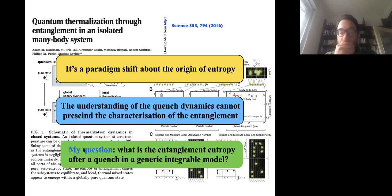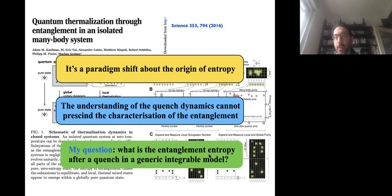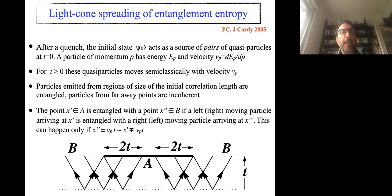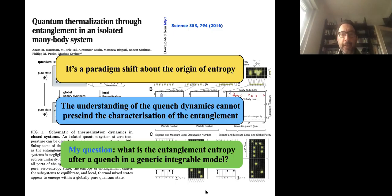From the philosophical point of view, these ideas are a paradigm shift about the origin of entropy — thinking that entropy is nothing but entanglement is a really different way about thinking about entropy. From the more practical point of view, understanding the quench dynamics cannot proceed without understanding the entanglement entropy. My question to answer in this talk is: what is the entanglement entropy after a quench in a generic integrable model?